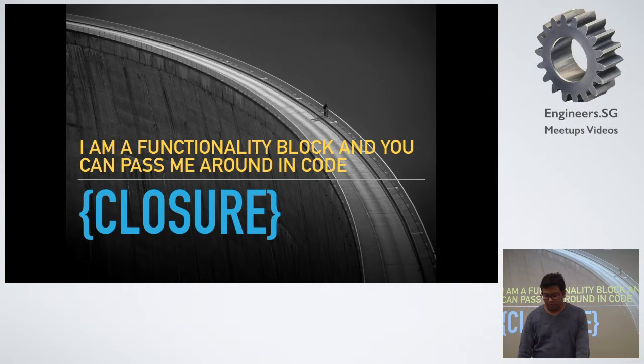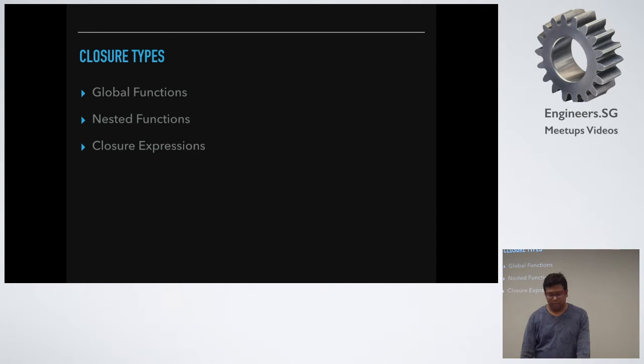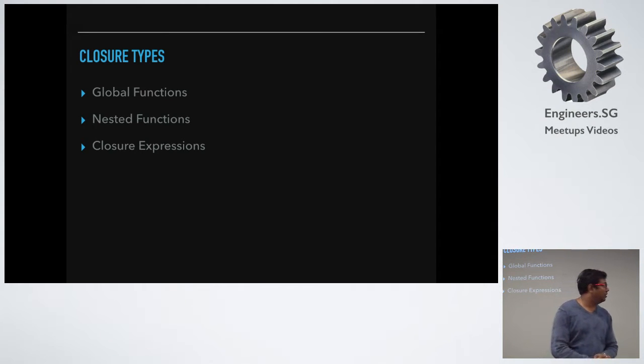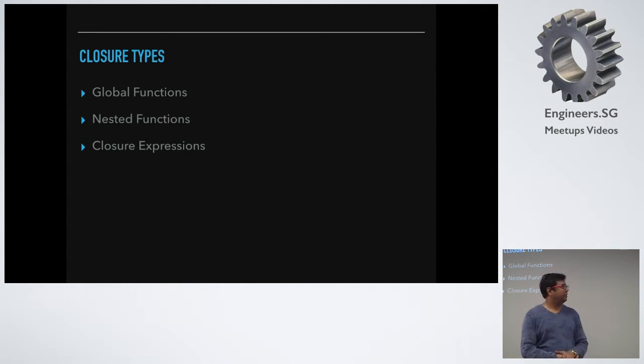Within Swift, there are three different types of closures. The first is a global function, the second one is nested, and the third one is a closure expression.